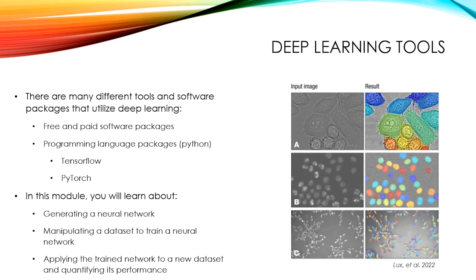In this module, you'll learn about generating a neural network, manipulating a data set to train a neural network, applying the trained network to a new data set, and quantifying its performance. The figure contains input images on the left and corresponding segmented images on the right. This network was trained using an add-on to ImageJ, a free image analysis program from the NIH.